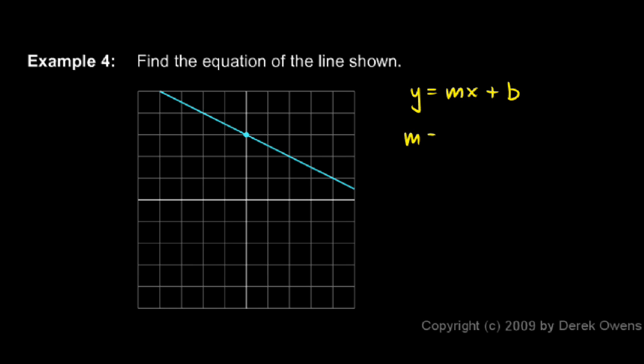We just need to get the values for m and b, and then we have the equation for the line. We can see what those numbers are just by looking at the graph. Right here is the y-intercept, and that's at 3. That's our value for b.